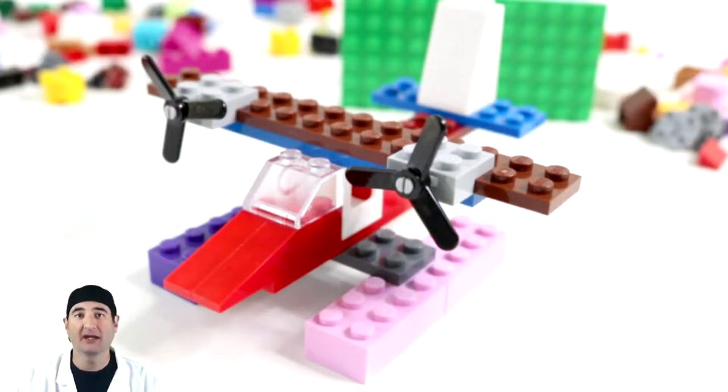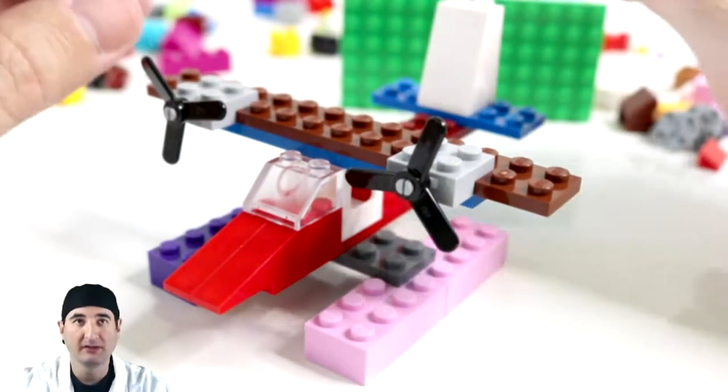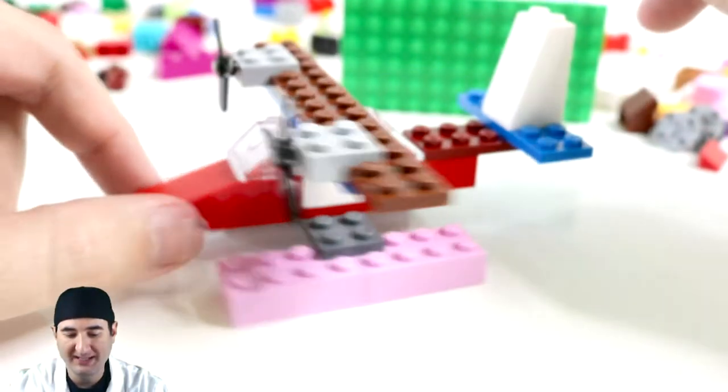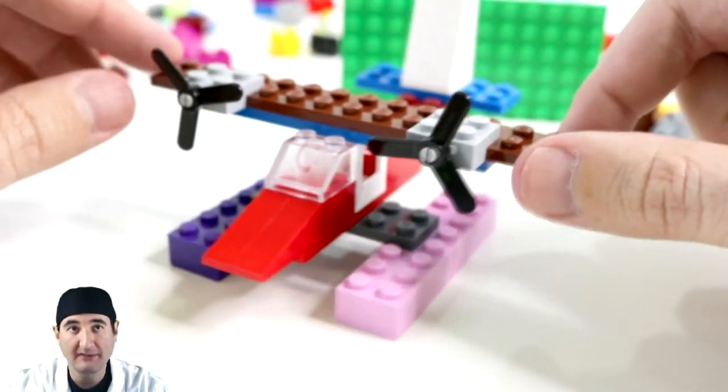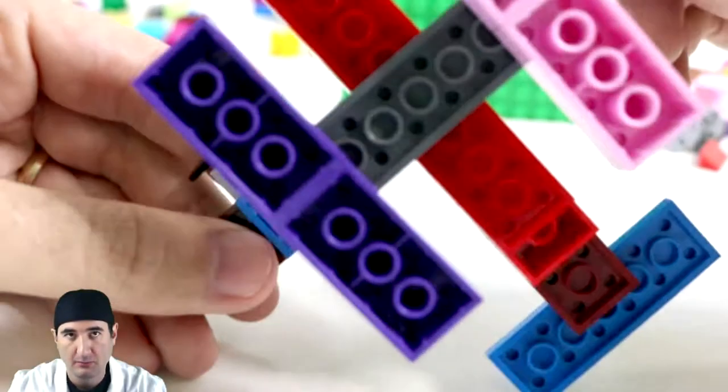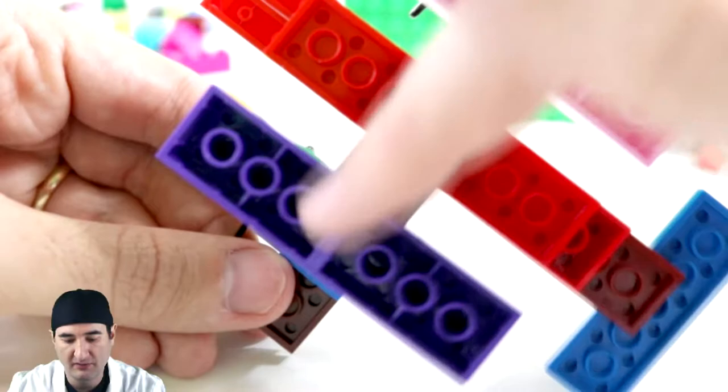So this is a seaplane and I really like how it turned out. It's one of my best five minute challenges, I think. We got the pontoons on the bottom, like over here and here.